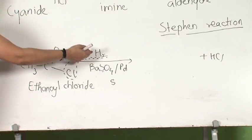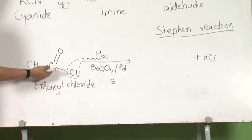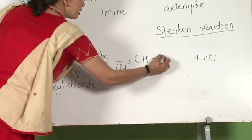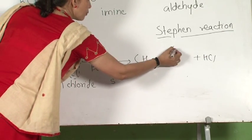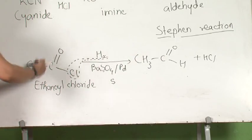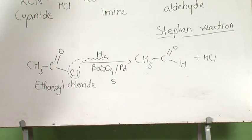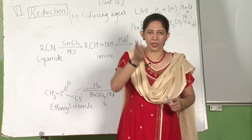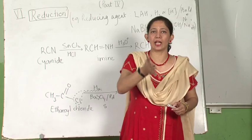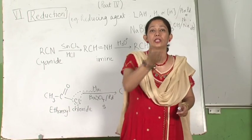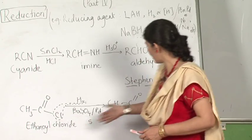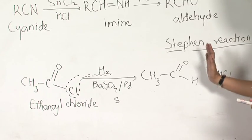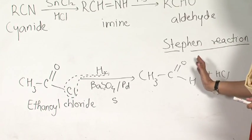What is left? This H is getting attached to the carbon atom, so I get CH₃–C double bond H — I am getting the corresponding aldehyde. An acid on reduction gives an aldehyde, and aldehyde on further reduction will give a primary alcohol. But here the reaction stops.